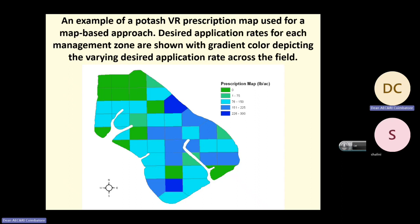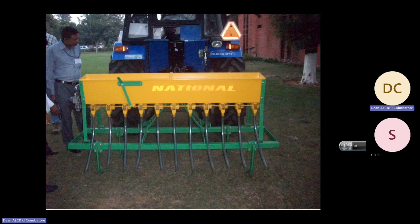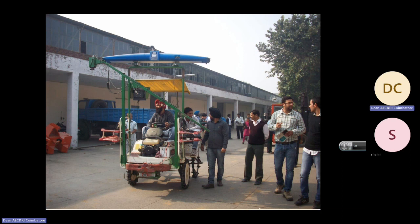We are developing a seed drill with variable rate fertilizer application. Another machine shown here is a sprayer with a camera at the front. As it moves in the field, it detects plants, takes images of each plant, and through image processing, sends data to a computer that calculates the percentage of nitrogen required for that plant. A sprayer at the back then sprays nitrogen based on the plant's requirement — not continuously, but only when required.